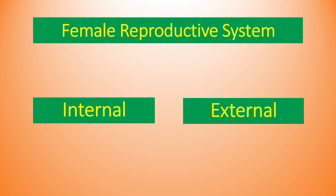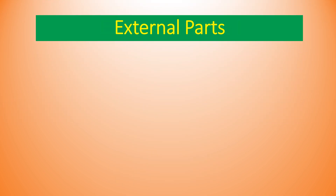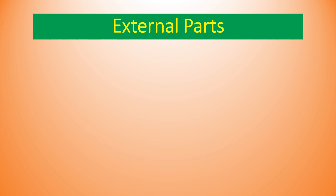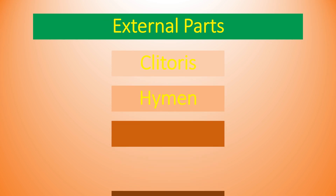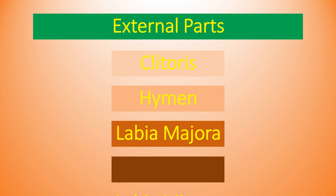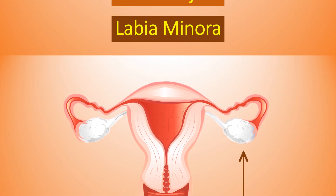External parts consist of clitoris, hymen, labia majora, and labia minora. Let's discuss in detail about each part of the female reproductive system.